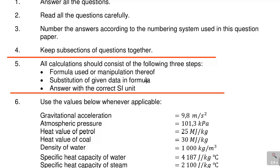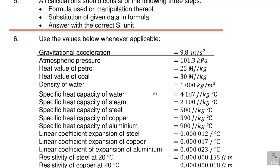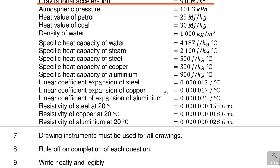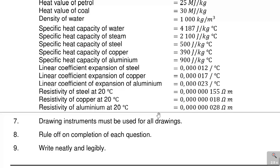The next important part is gravitational acceleration, which we will be using — it is 9.8 metres per second squared. Also, drawing instruments must be used for all drawings, meaning don't use your free hand but try to sketch using a ruler. Rule of completion of each question: write neatly and legibly. Depending on the question, we can always come back to that information.